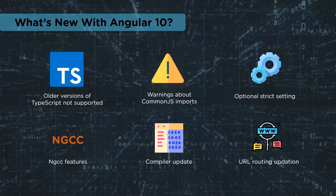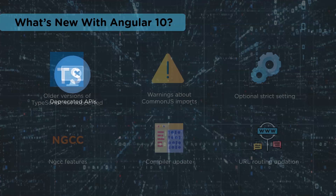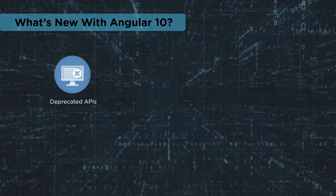Next up is URL routing. Previously, returning null from a URL matcher would throw an error: 'type null is not assignable to type UrlMatchResult.' This has been fixed and the return type can now be null. Angular 10 has also seen deprecation of ESM5 bundles, which saves up to 120 MB of download and install time when running yarn or npm install for Angular packages. Older browsers including Internet Explorer 9, 10, and Internet Explorer Mobile are also being deprecated.